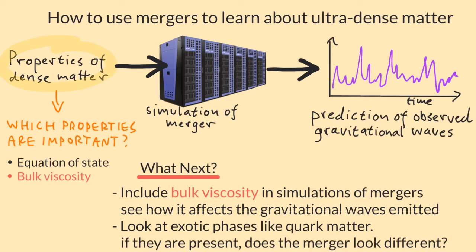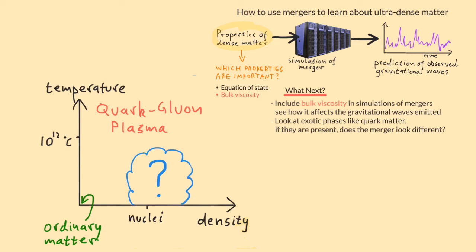If there's a difference, that would be really exciting. It would mean that we could use future gravitational wave observations of mergers to tell us what kind of matter is created inside them. And that would finally tell us what form matter takes when it's squeezed and heated to these incredible extremes.